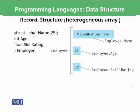For example, we want to store the information of an employee. That might have a name, that might have an age, and that has a skill. The name is of character type and the age is of integer type and then the skill rating is of float type.